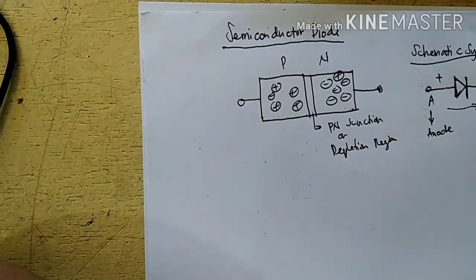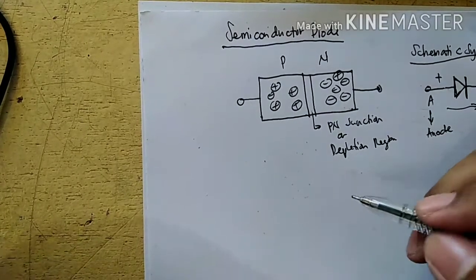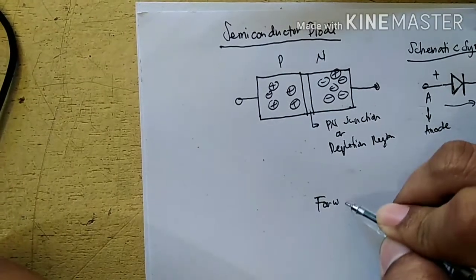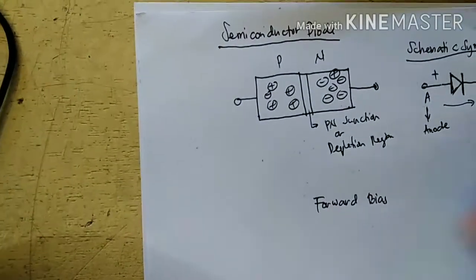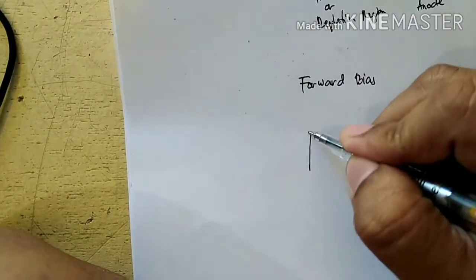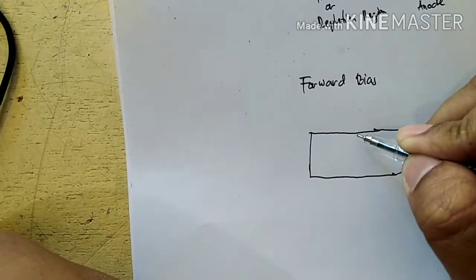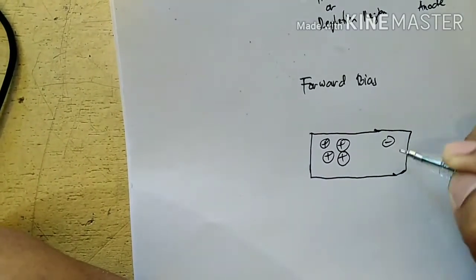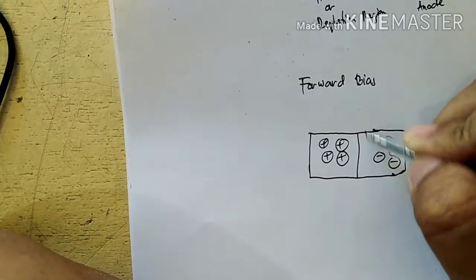Let's discuss how the semiconductor diode works. Let's start with what we call the forward bias. In forward bias, this is the depletion, this is the P-type material and N-type. This is the depletion region.